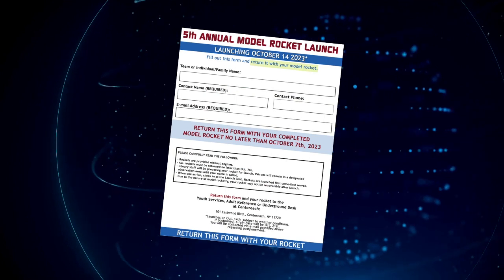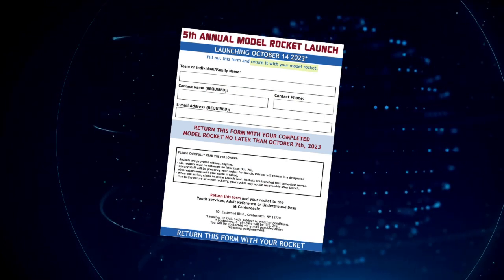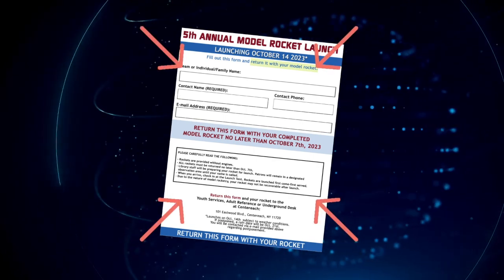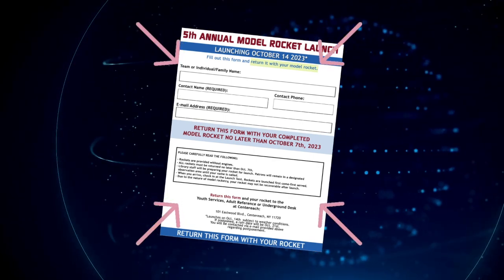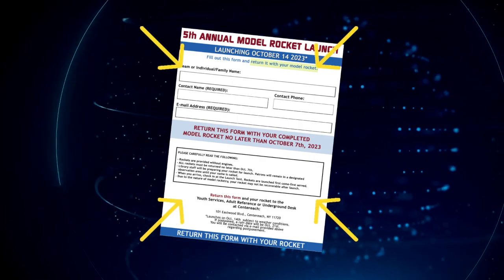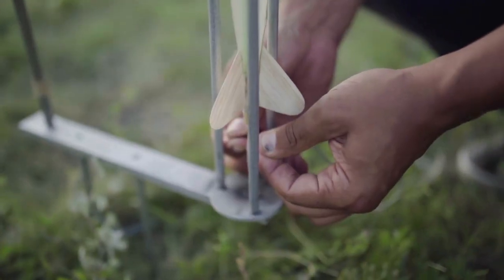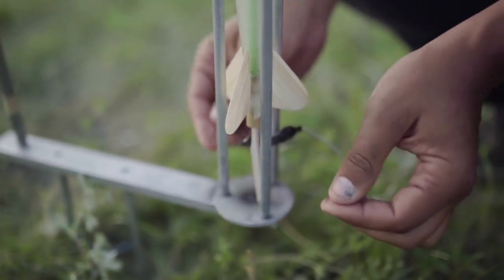You'll also find the launch application. Please read it carefully and don't forget to save the bag. You'll need to fill out this form and return it with your completed model rocket in your bag no later than October 7th to the Center Reach building. This will give us enough time to prep your rocket for launch.